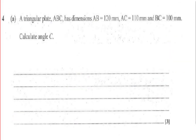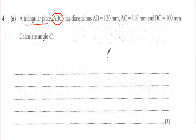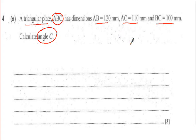Question four is trigonometric problems — they could involve right-angle or non-right-angle triangles. You're given a triangular plate with vertices labelled A, B, C (the angles) and three side lengths given. You need to find angle C. Sketch the triangle carefully, then decide whether to use basic sine, cosine, and tan functions if it's a right-angle triangle, or the sine or cosine rule if it's not. There are three marks because there's a bit of work involved.